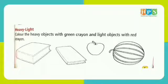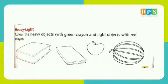Heavy means bhaari or vajanwala. Light. Light means halka. You can see there are two books — one big book and one small book. Big book is heavy and small book is light. You can also see a watermelon and an apple. Apple is light. Heavy means bhaari and light means halka. Spelling of heavy is H-E-A-V-Y, heavy. And spelling of light is L-I-G-H-T, light.